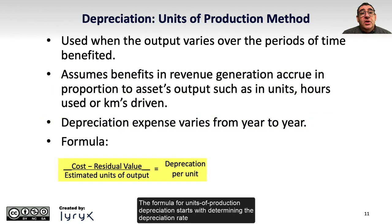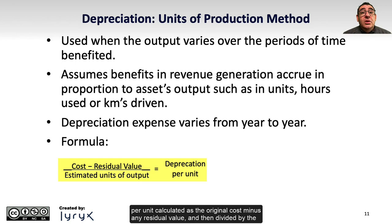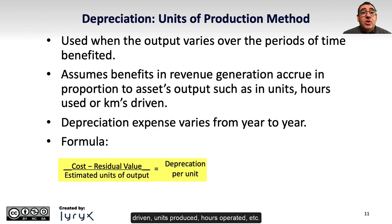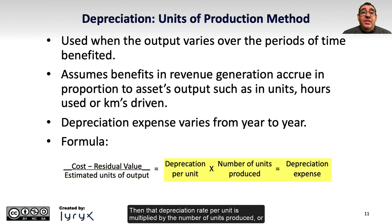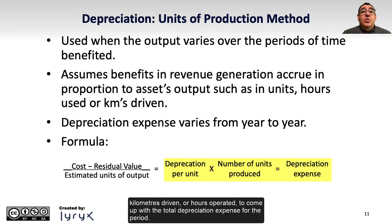The formula for units of production depreciation starts with determining the depreciation rate per unit, calculated as the original cost minus any residual value, divided by the estimated units of output — which could be kilometers driven, units produced, hours operated, etc. That depreciation rate per unit is then multiplied by the number of units produced, kilometers driven, or hours operated to arrive at the total depreciation expense for the period.